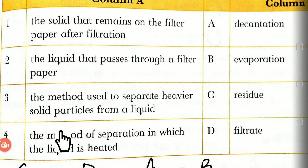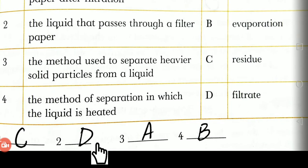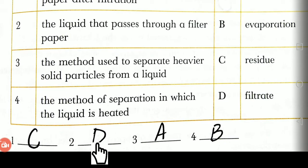Now the second statement is: the liquid that passes through the filter paper. That is known as filtrate, so in the second blank we will write down D, capital D.